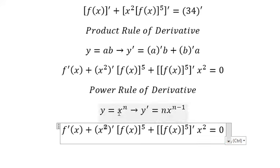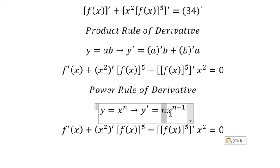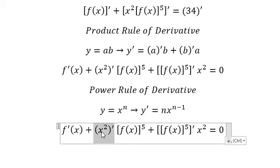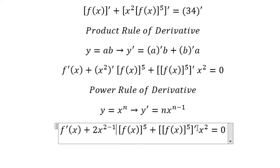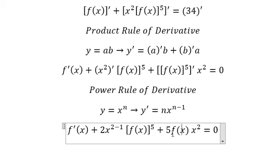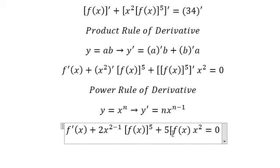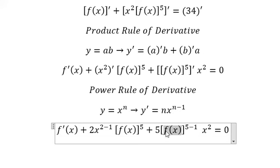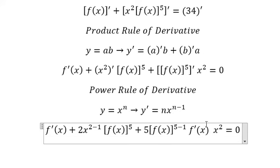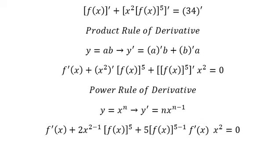So for x squared, we substitute n equals two, giving us two times x to the power of two minus one. For f(x) to the power of 5, we get five times f(x) to the power of five minus one. Because we still have f(x) inside, we continue by applying the first derivative of that term — that's the chain rule of derivative.